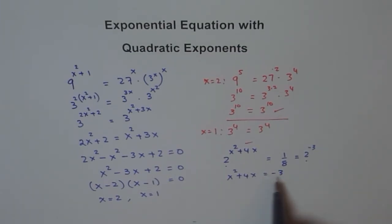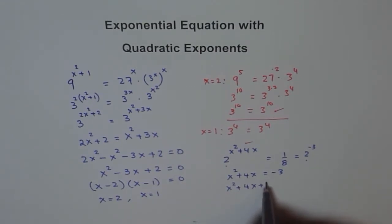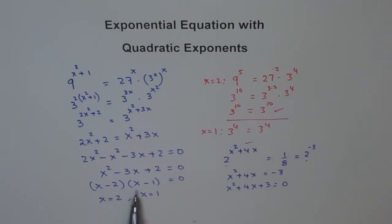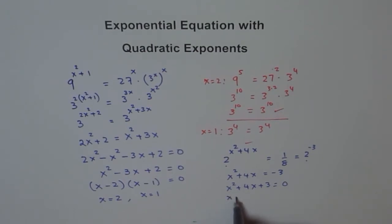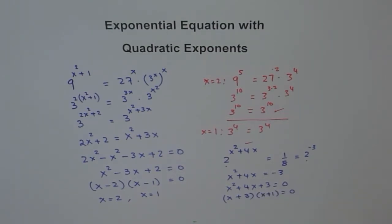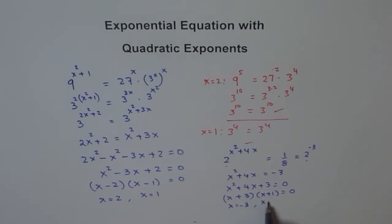The idea is: make the bases the same, then equate exponents. So we solve x squared plus 4x plus 3 equals 0. Factoring gives x plus 3, times x plus 1, equals 0. Then check your answers — the solutions are x equals minus 3 and x equals minus 1.